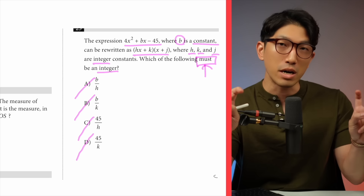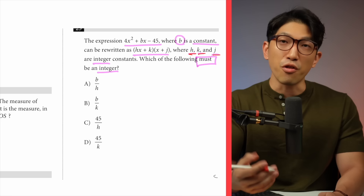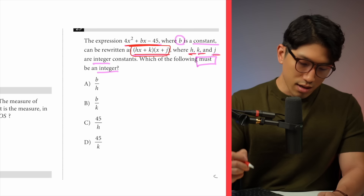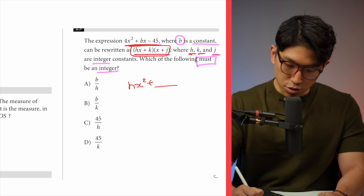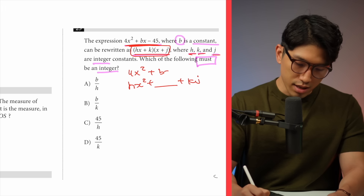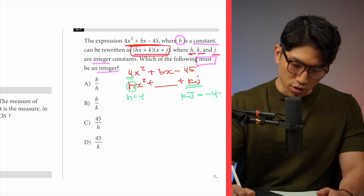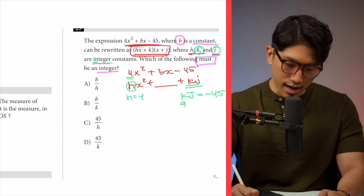First, we want to get as much information about h, k, and j as possible. We know the factored form equals the original expression, and if we expand the two factors we get hx squared plus some middle term plus kj. Comparing to the original equation 4x squared plus bx minus 45, matching up coefficients tells us h equals 4, and k times j equals minus 45. Because k and j have to be integers, they are whole-number factors of 45, like 9 and 5, 15 and 3, 45 and 1, and so on.